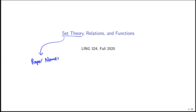For instance, we can use set theory to talk about all the people in Ling 324, all the people in Ling 322, and we can use manipulations on those to talk about people in both 324 and 322, or 322 or 324, or maybe the people taking 324 but not 322, and so on. We'll also be able to use set theory to describe properties of things, such as nouns and adjectives.